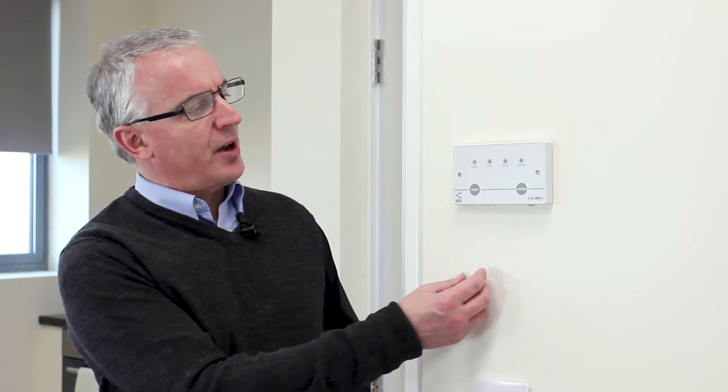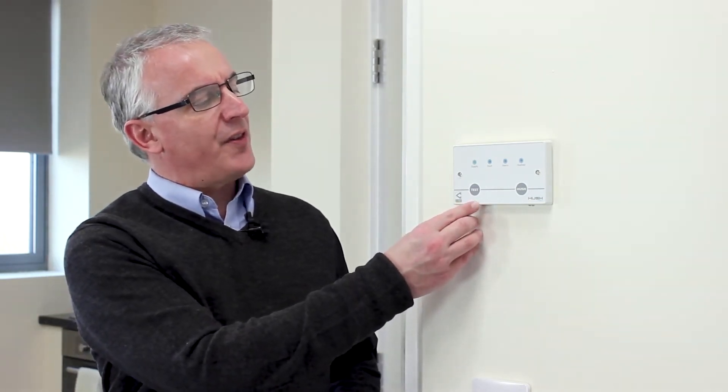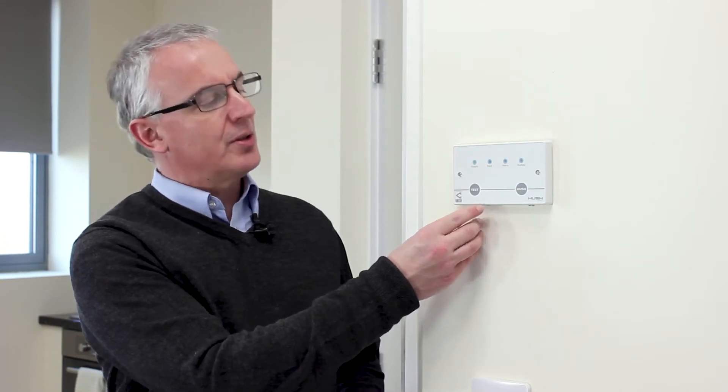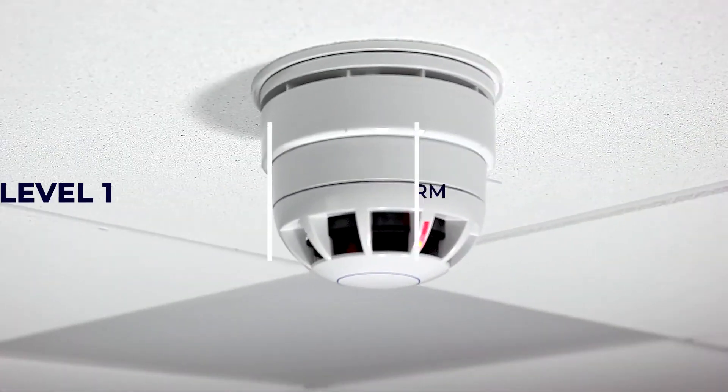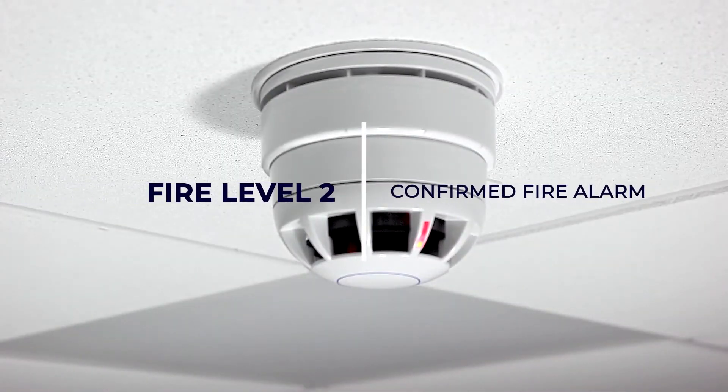There's also a test facility on the Hush controller, so when the system is in its normal state, you can come along and press and hold the test button which will sound the Fire Level 1 and Fire Level 2 alarm tones.